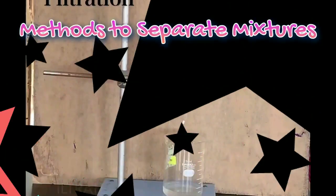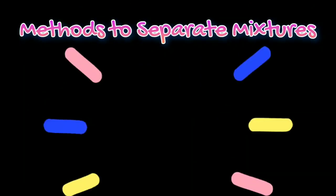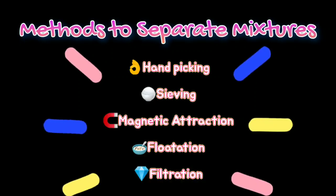In this topic, we already learnt five methods to separate mixtures, which are hand picking, sieving, magnetic attraction, flotation, and filtration.